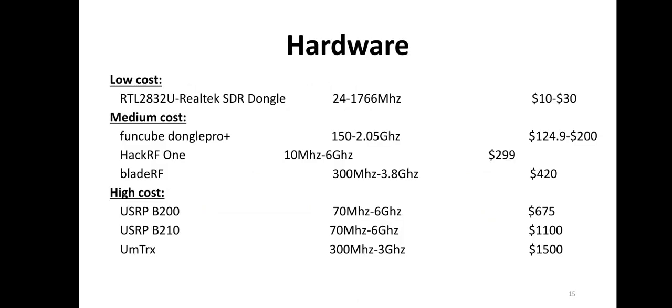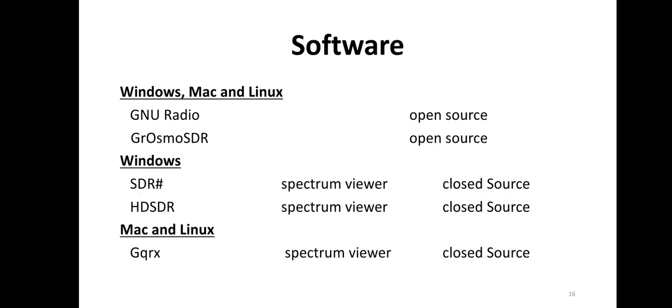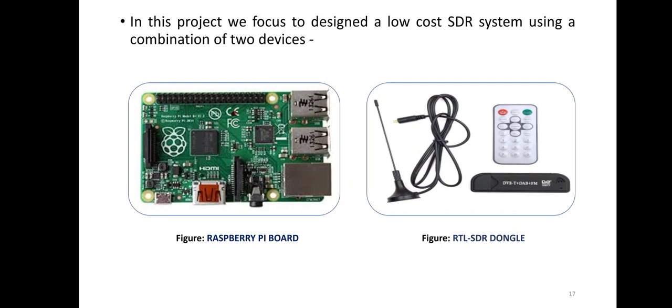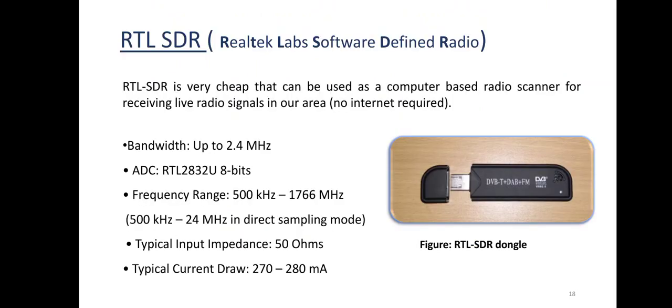Depending upon price and bandwidth, there are different types of SDR hardware. Depending upon the operating system, we have different types of software available. We used Raspberry Pi and RTL-SDR to design our project. These are some basic characteristics of the RTL-SDR.